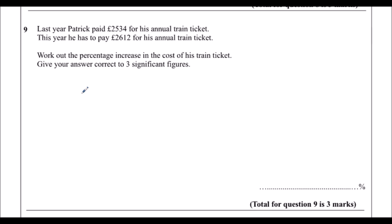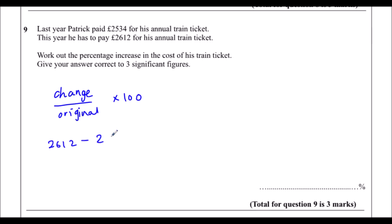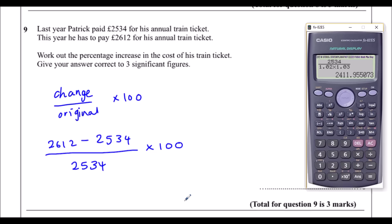Question 9. Last year Patrick paid £2,534 for his annual train ticket; this year he has to pay £2,612. Work out the percentage increase to three significant figures. The percentage increase is the change over the original times 100: (2612 − 2534) / 2534 × 100. Typing this into the calculator gives 3.08%.